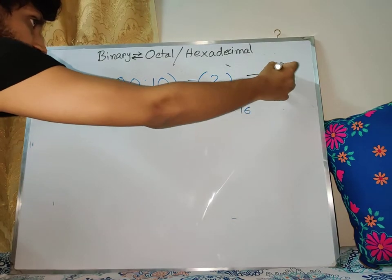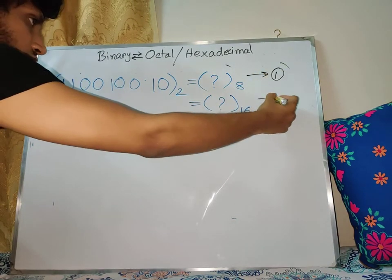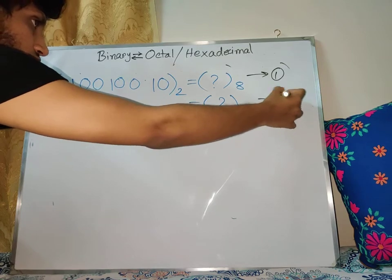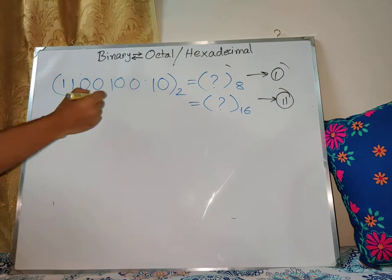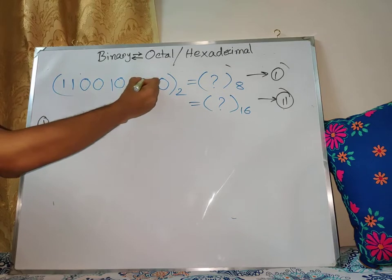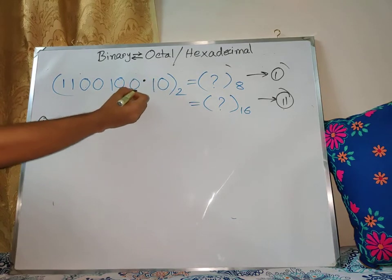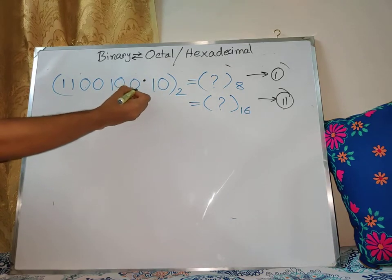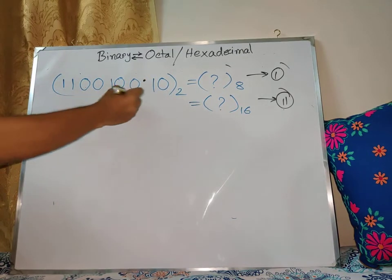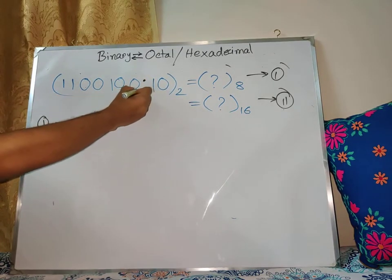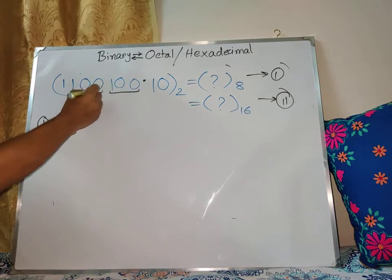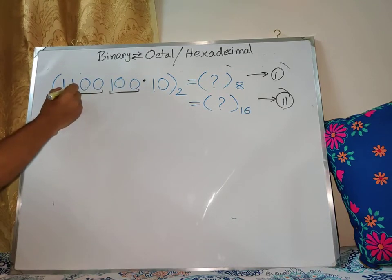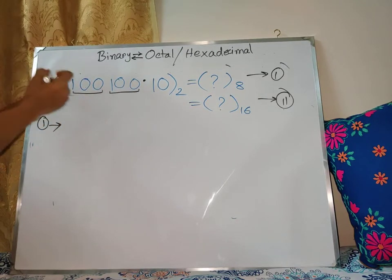Let's mark this as number one and this as number two. First, we will solve number one. The point here is that the immediate left side has three groups, and here is three groups — and these three groups make one number.